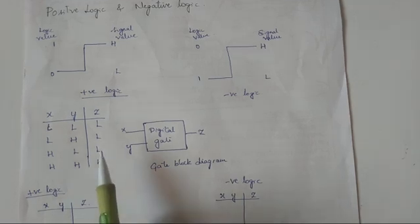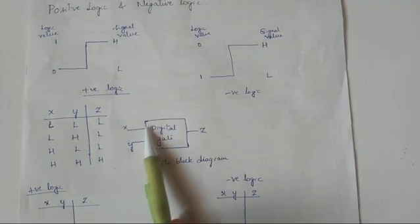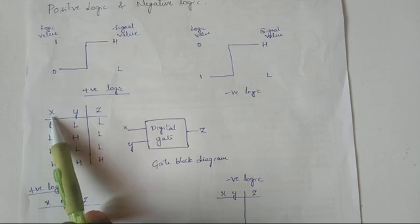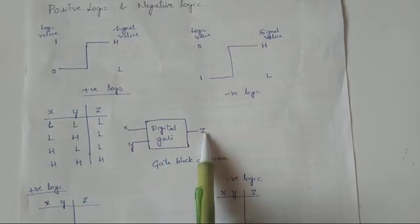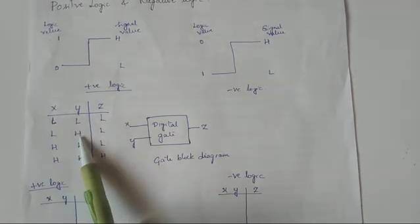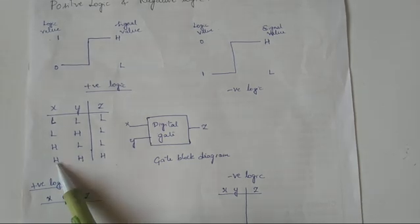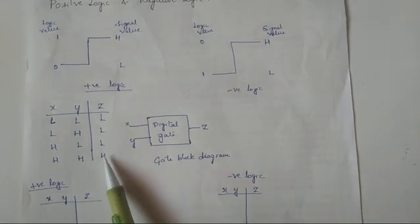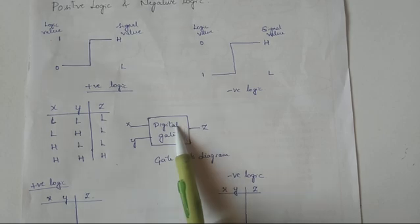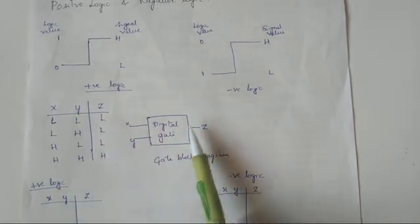Now let us consider a digital gate with inputs X and Y and output Z. The signal value truth table is: L L → L, L H → L, H L → L, H H → H. This is the signal-level behavior of the digital gate.